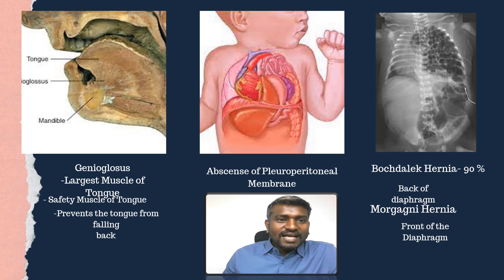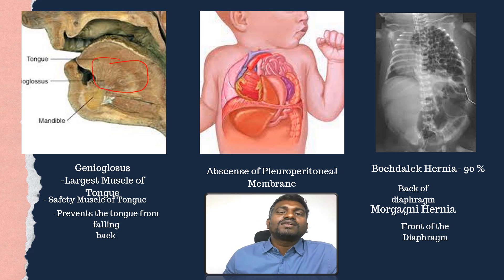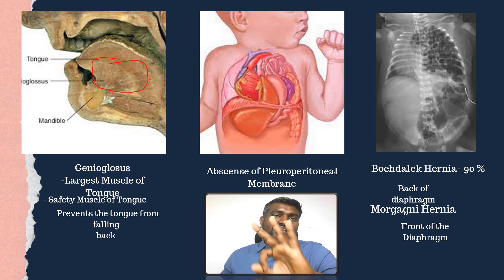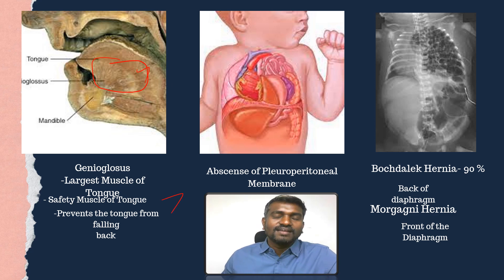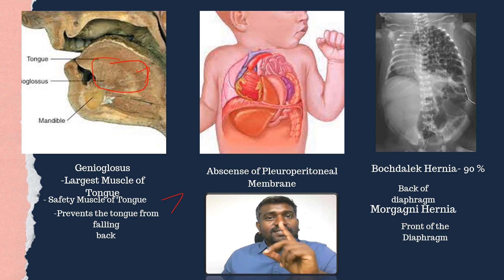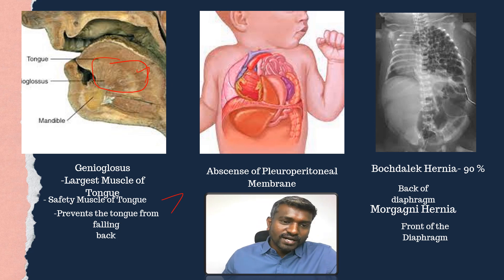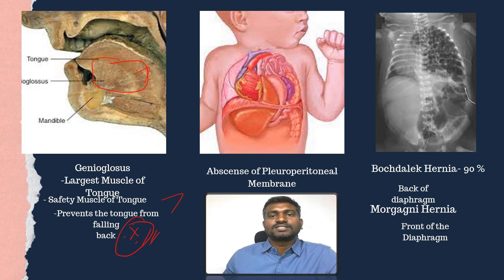The large muscle here is the genioglossus. Remember three important points: number one, it is the largest muscle of the tongue; number two, it is the safety muscle of the tongue; and number three, it prevents the tongue from falling back.